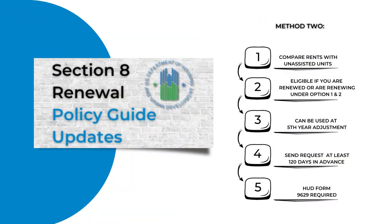This method allows the owners to compare the proposed Section 8 rents to the comparable unassisted units in the same project. You are eligible to use this method if you are currently renewed or renewing under an option one or two.